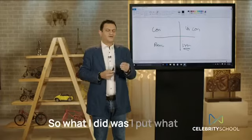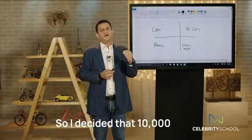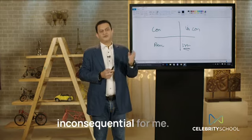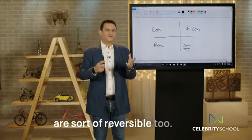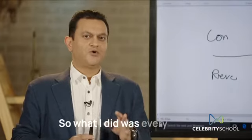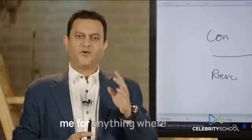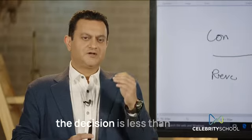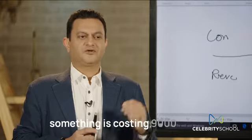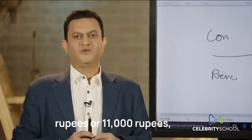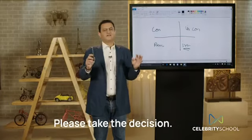So I defined what is inconsequential for me — I decided that 10,000 rupees and below is inconsequential. And most of those finance-based decisions are also reversible. So I told my assistant that he cannot approach me for anything where the decision is less than 10,000 rupees in value. Whenever there's a decision to be taken — if something is costing 9,000 rupees or 11,000 rupees, which one should I buy, the delivery is faster — please take the decision, don't approach me at all.